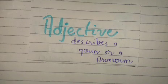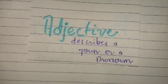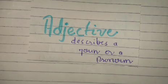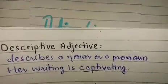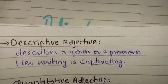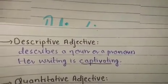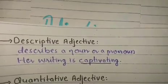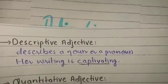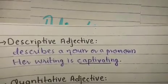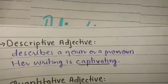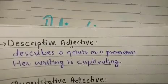An adjective is a describing word — it describes a noun or a pronoun. There are different kinds. A descriptive adjective describes a noun or a pronoun. For example, 'her writing is captivating' — here 'captivating' is describing 'her writing.' The subject can be a single word or a group of words, so 'her writing' is a complete subject.